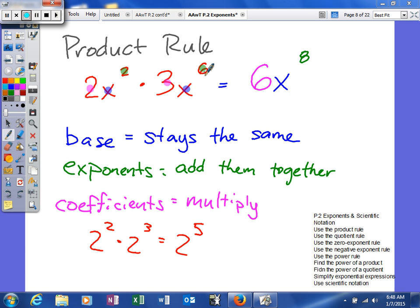What the product rule basically says is you are trying to multiply things together. We have a like base. As you can see, our base is this right here. It's our x, and we have like bases. So whenever we're multiplying like bases, we can use the product rule.